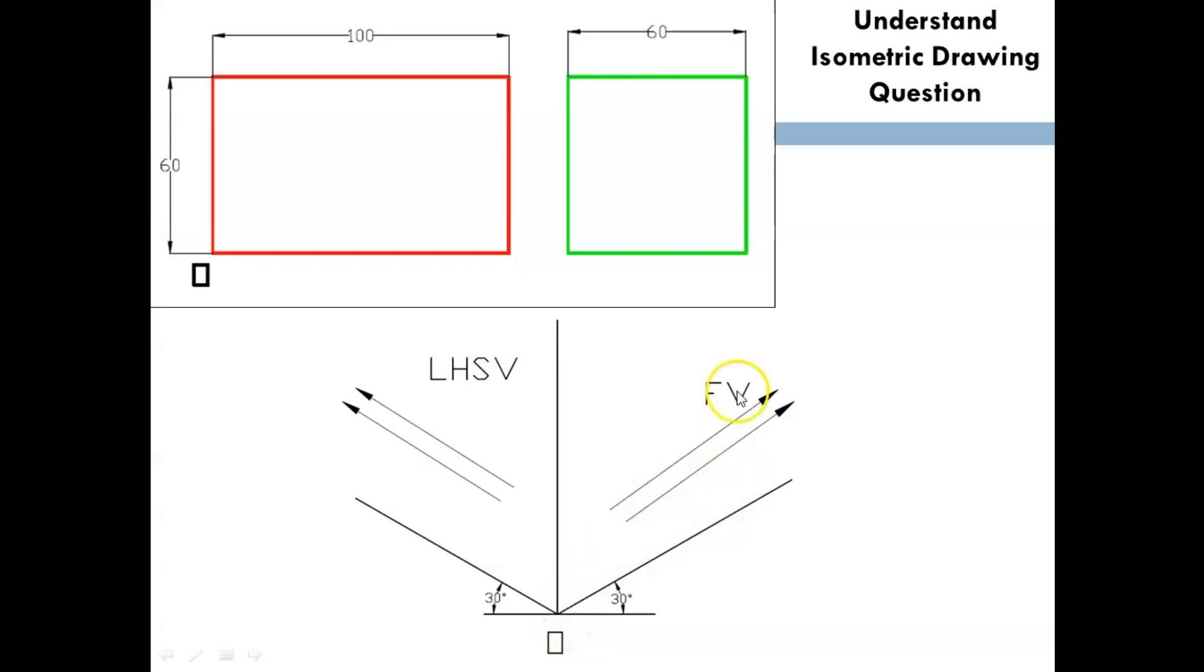Obviously, the side view will come on the left side. No matter whether they have mentioned the name of the views, you focus on the origin. This view is on the right of the origin, so you have to draw it on the right side, and the other view will come on the left automatically. Let's start with the problem.